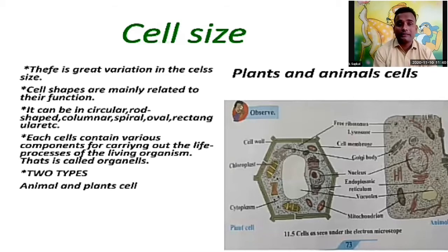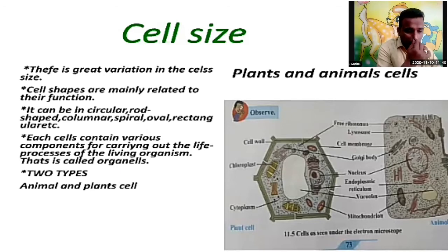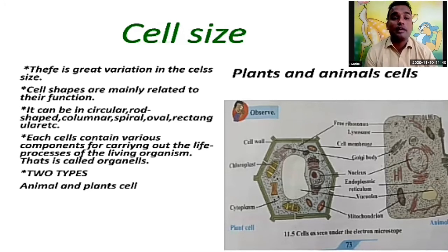When you think about the cell, it is a very important and very small thing, but inside the cell there are many components. These components carry out the life processes that we are performing regularly and daily — those are called organelles. Now there are some types of cells; the smallest unit of an organism is a cell, and cells are of two types.